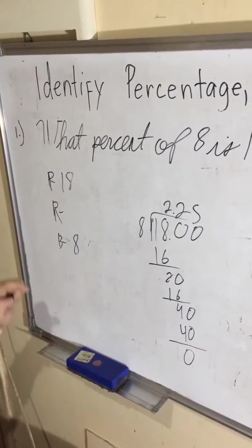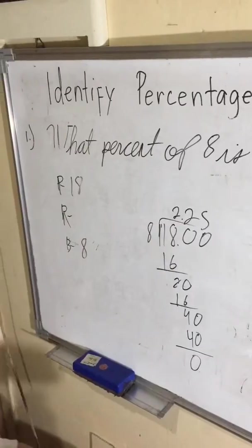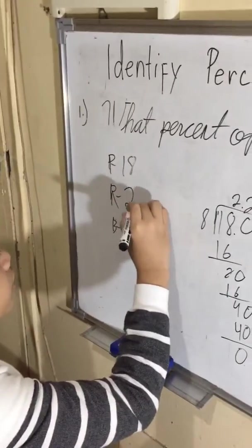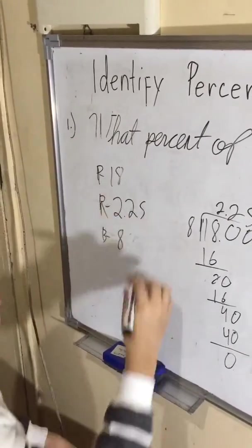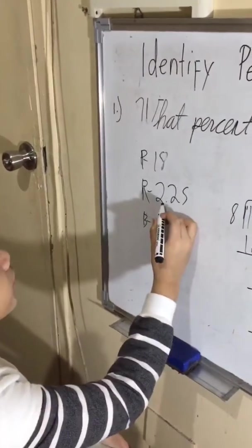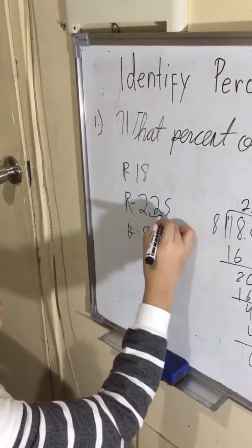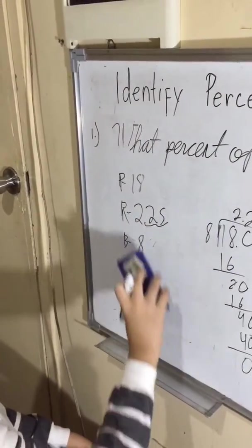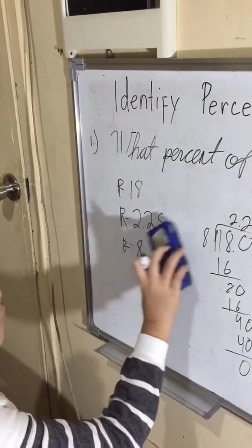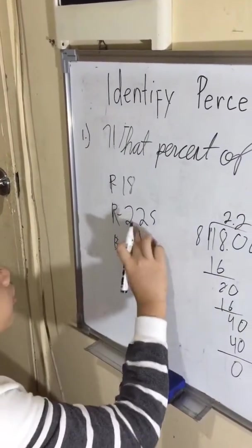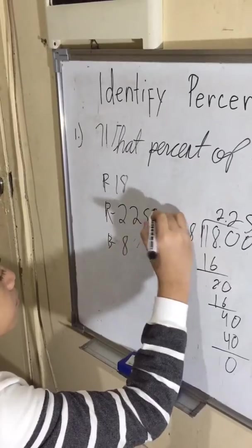So the rate for this would be, to convert this into a percent we need to move two spaces to the right, so now it would be equal to 225 percent.